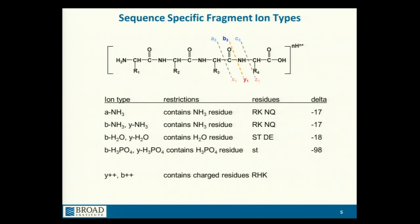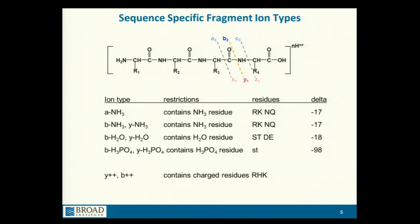Classically, the most important ions you're going to hear about again and again are B and Y ions, representing this bond. The reason they're called B and Y is because there are actually three different types of bonds. The other two tend to be less important in terms of their ability to fragment, and those labels are nominally A, B, and C ions, as well as X, Y, and Z.